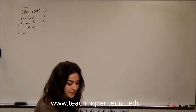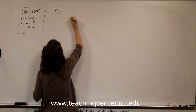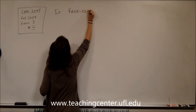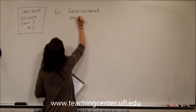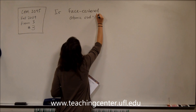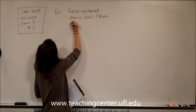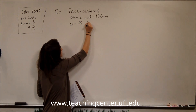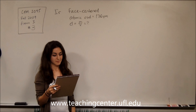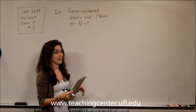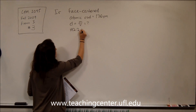The first thing we'll do is write down what we know. We have iridium, and it says it's a face-centered cubic crystal structure. Also, the atomic radius is 136 picometers. It's asking us to find the density, which is mass divided by volume. Something else we know is that iridium has a molecular weight of 192.2 grams per mole.